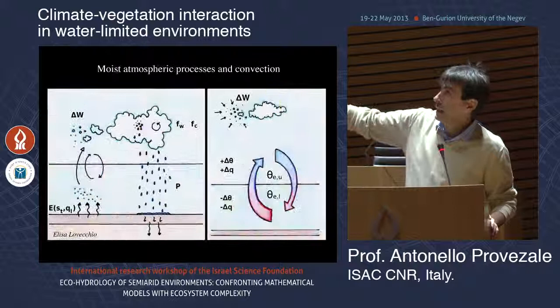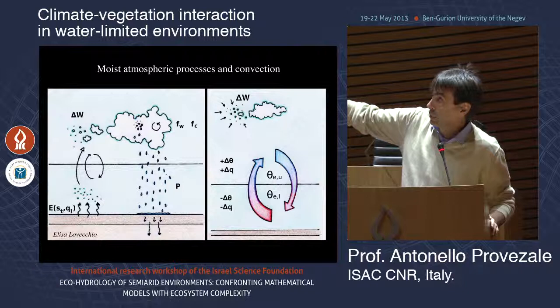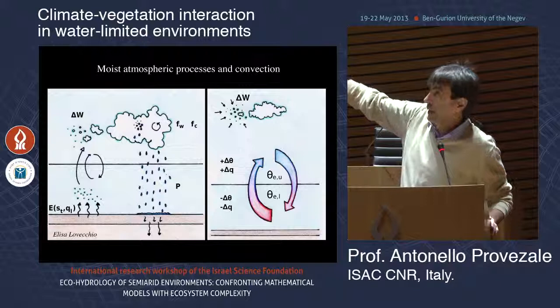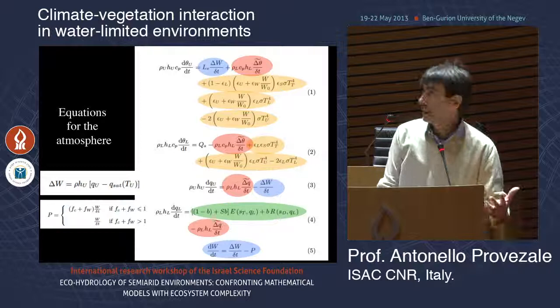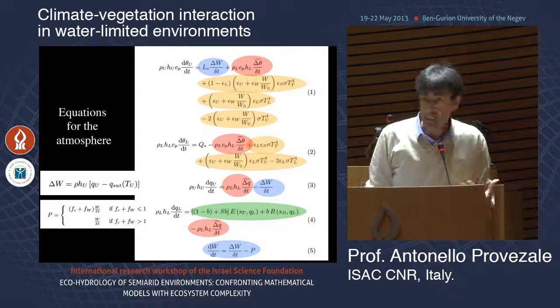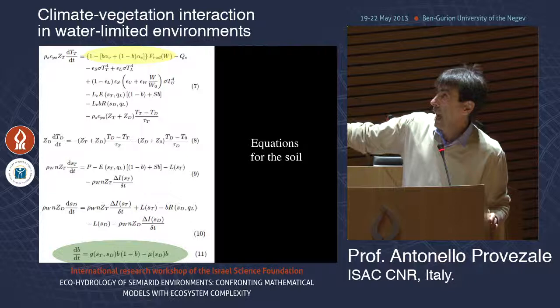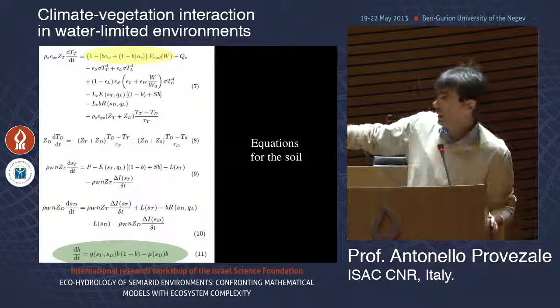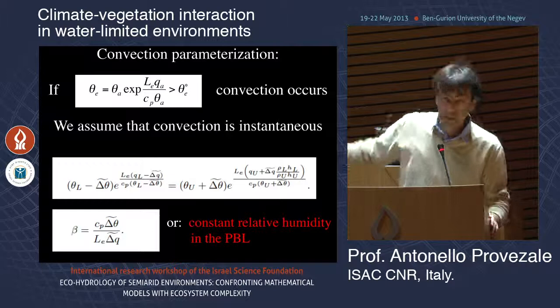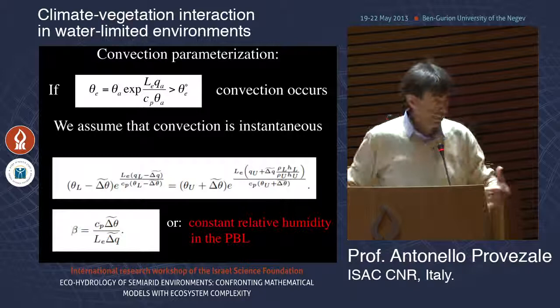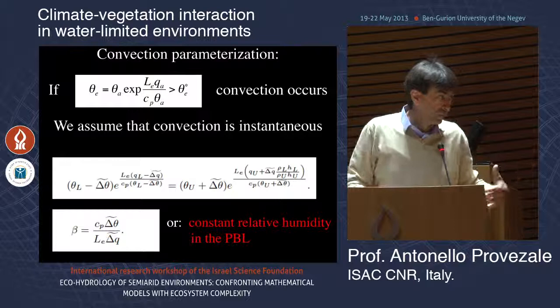You have the full hydrological cycle, and again convection occurs when the equivalent potential temperature of the PBL exceeds that of the troposphere — but now the troposphere temperature is a dynamical variable. For the convection parameterization we can make two choices: constant relative humidity in the PBL as before, or fix the Bowen ratio (latent heat to sensible heat), typical for desert conditions. Both provide similar results.